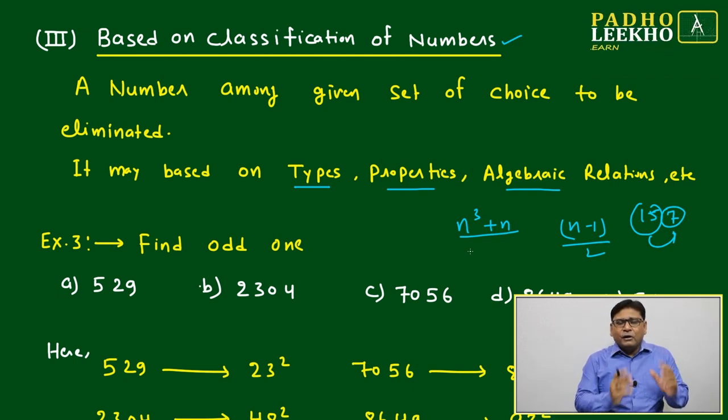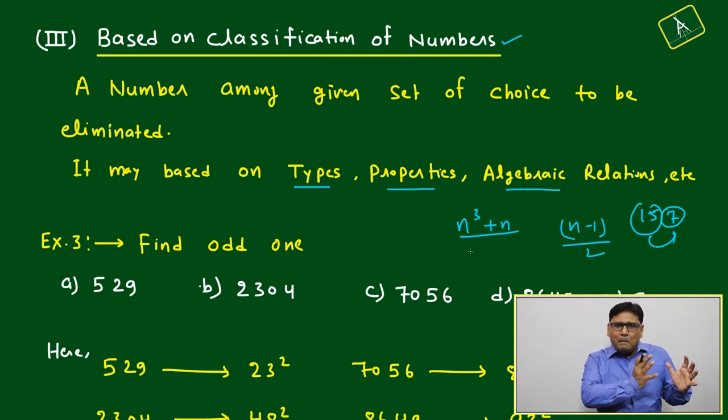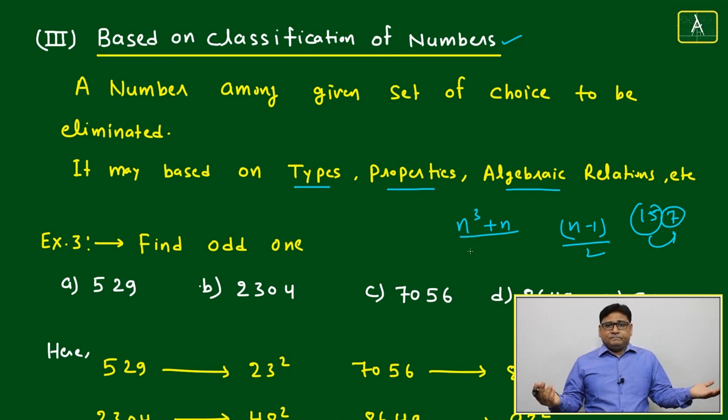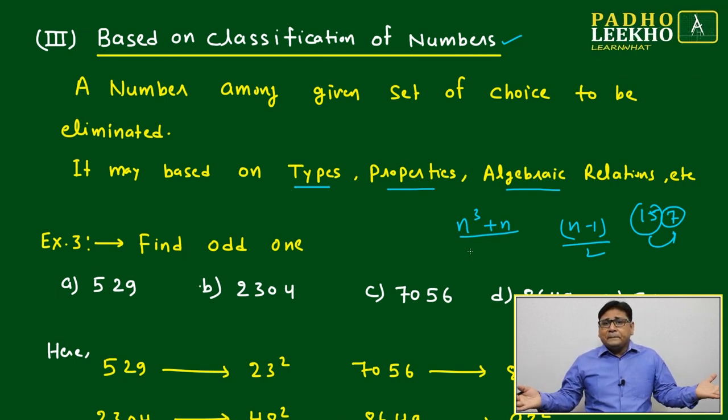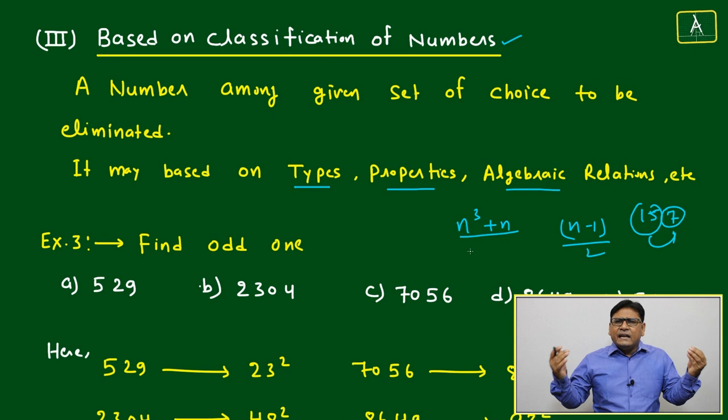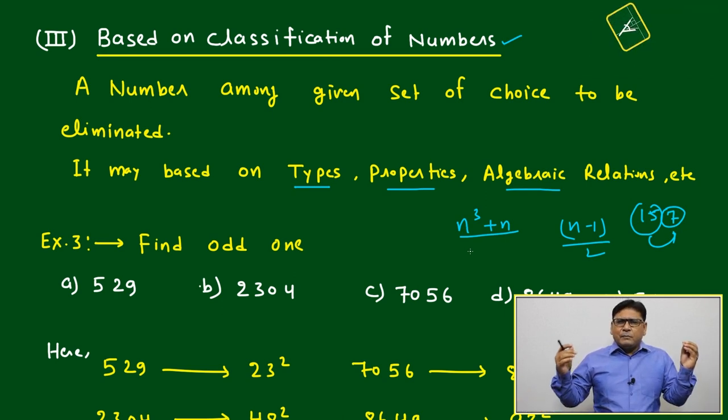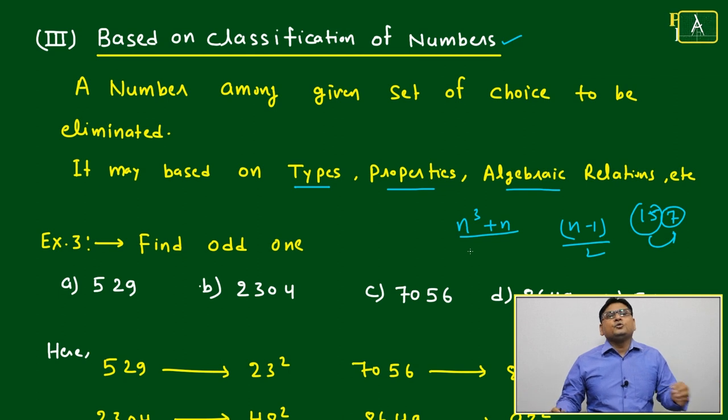For a number, and that relationship must be followed by the given numbers. And that relationship can be anything, any algebraic formula can be, any arithmetic operation can be, any number properties can be.